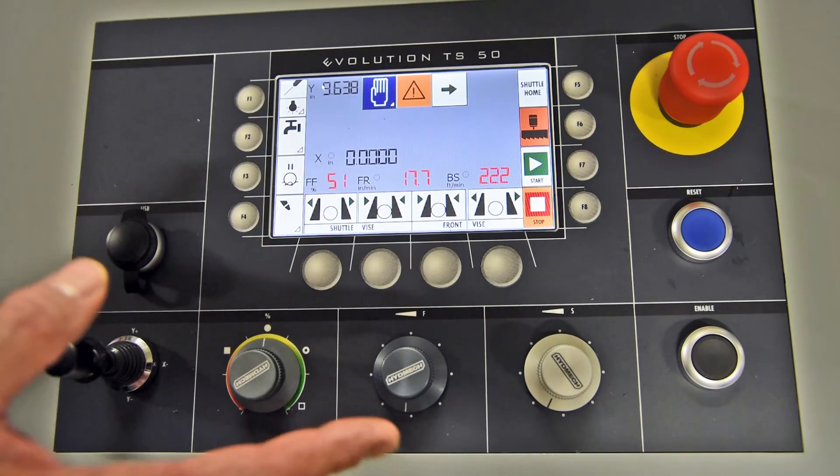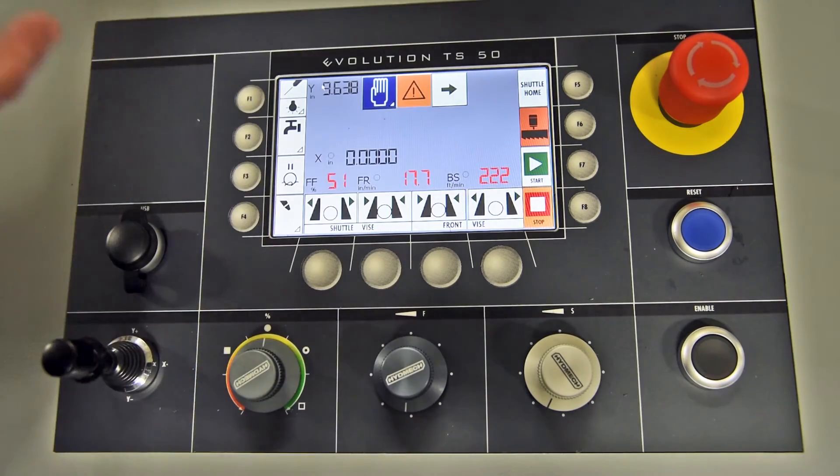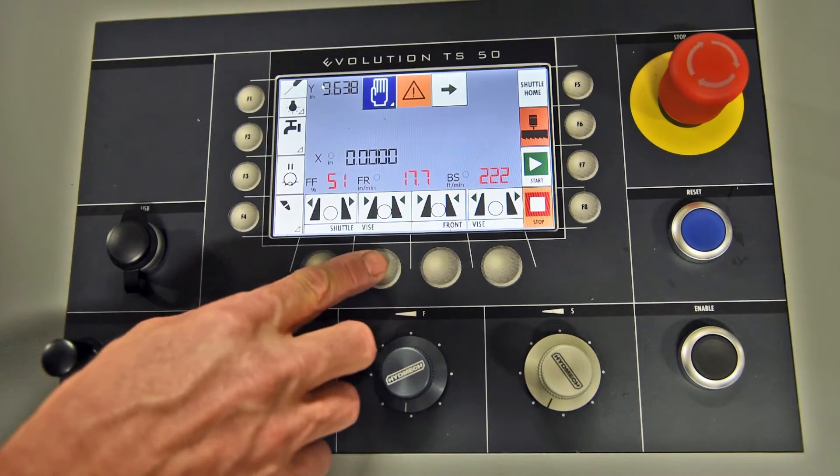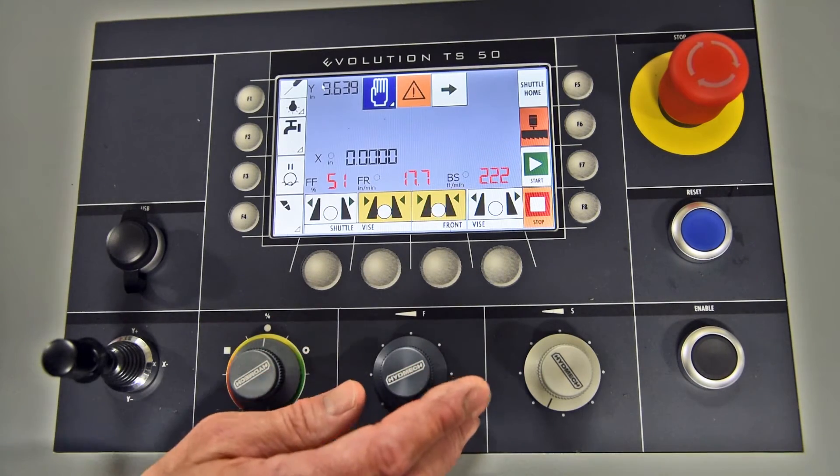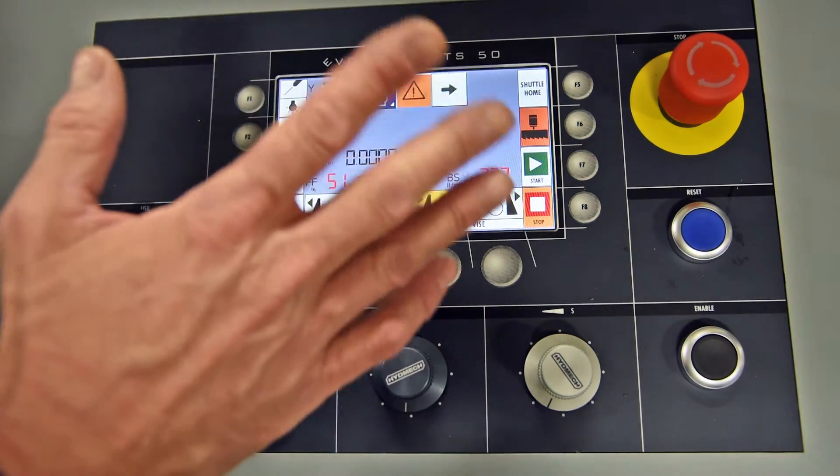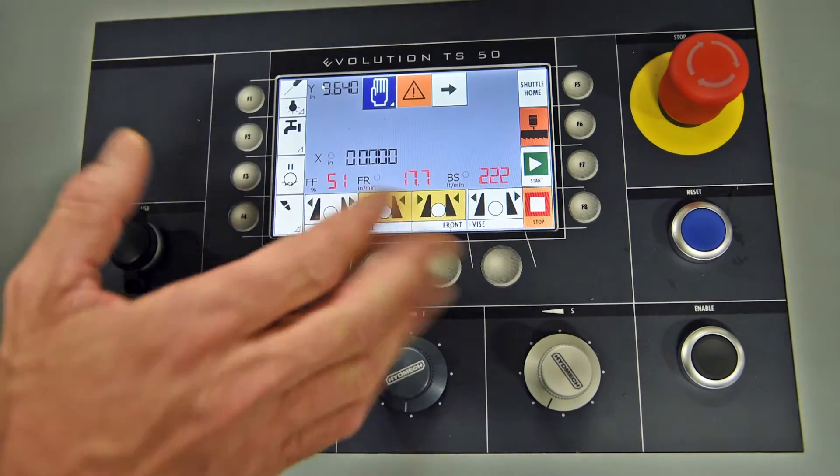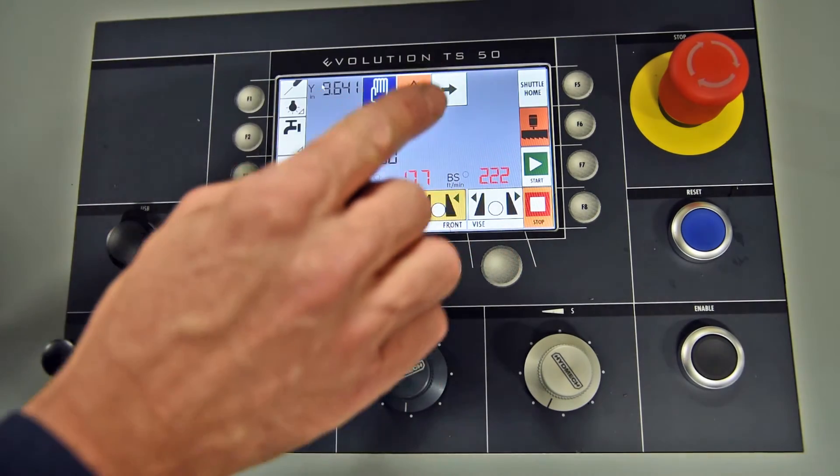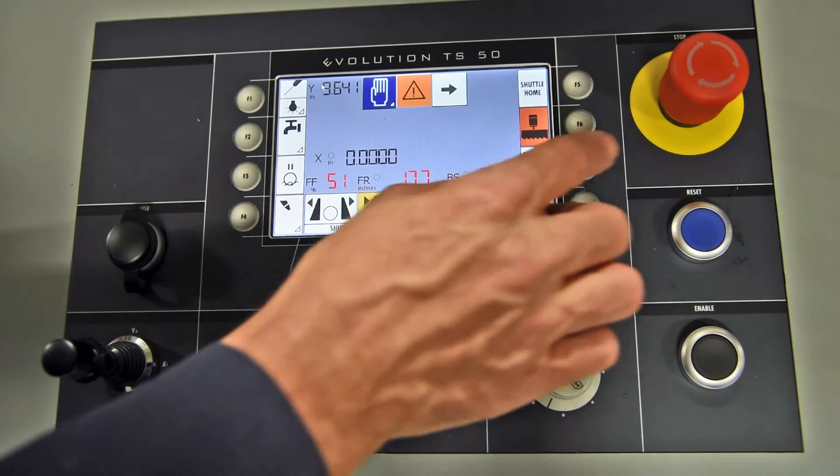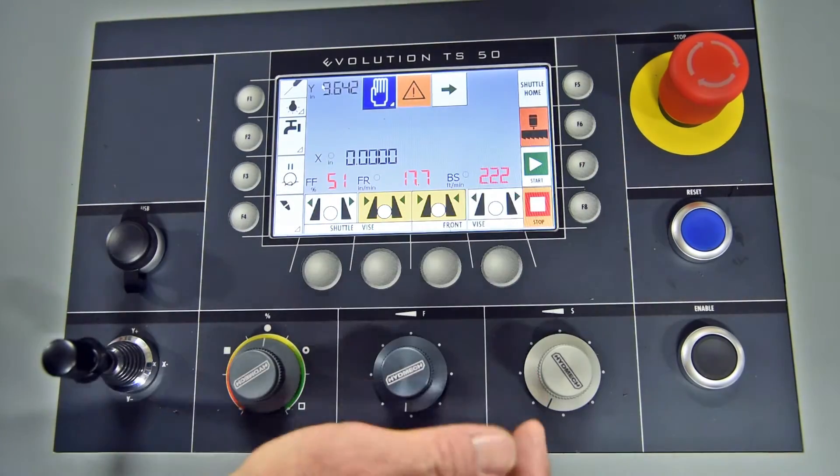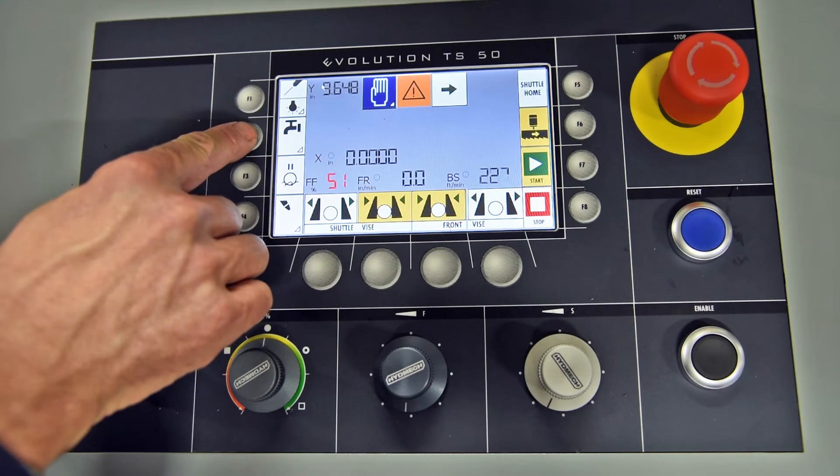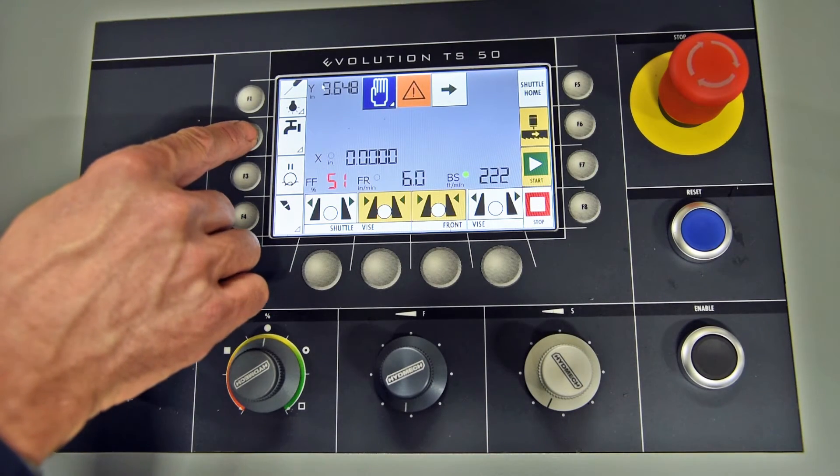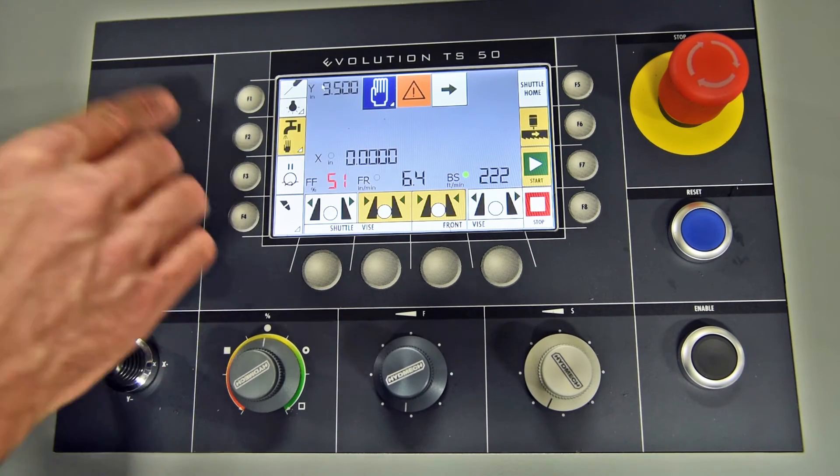This is going to be a manual mode situation, so you would bring your material in. At that point, you would clamp your shuttle vise, clamp your front vise. You would have your head already set above the material. So at this point, once your front vise, shuttle vise is closed, you would push F6, enable the blade, start cycle. This would be your coolant. Right now it's in the off position. That is on.